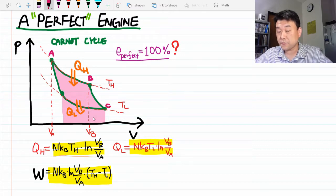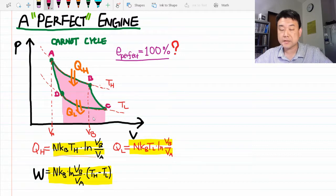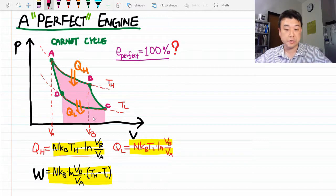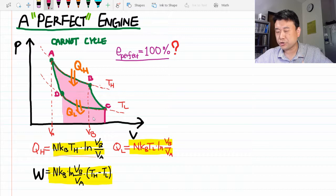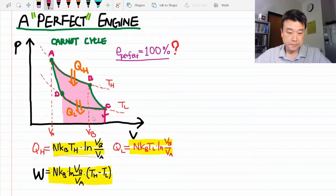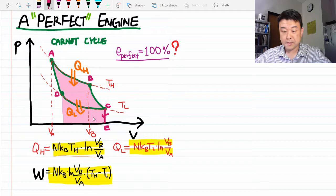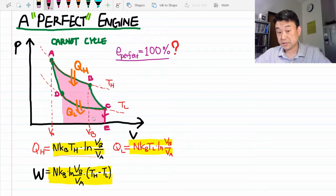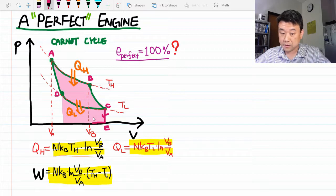And instead of returning to D, let's say we are going to reduce the pressure all the way down to zero. Now, practically this would be very difficult, but we are imagining an ideal scenario. Let's call this point E. And now that the pressure is at zero, you can change the volume without doing any work. So there's no work being done here, just the volume changing freely.